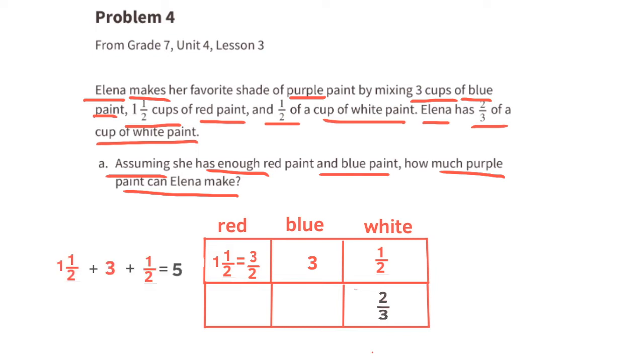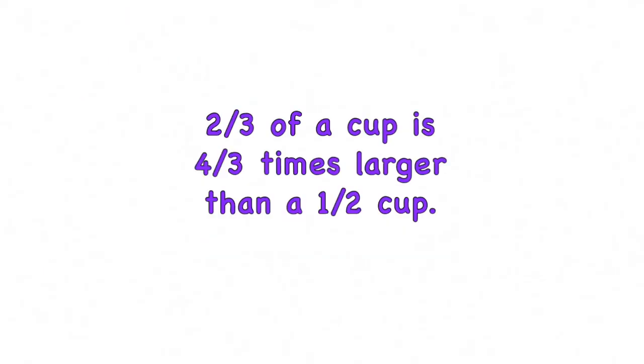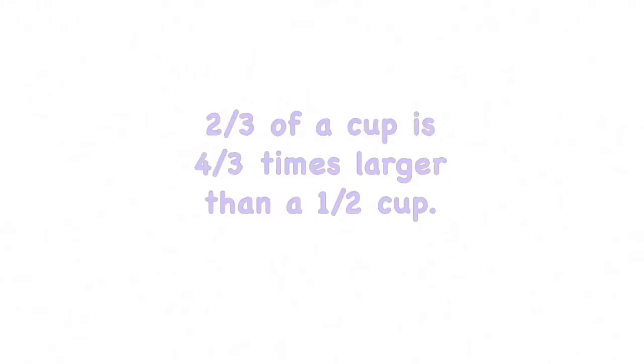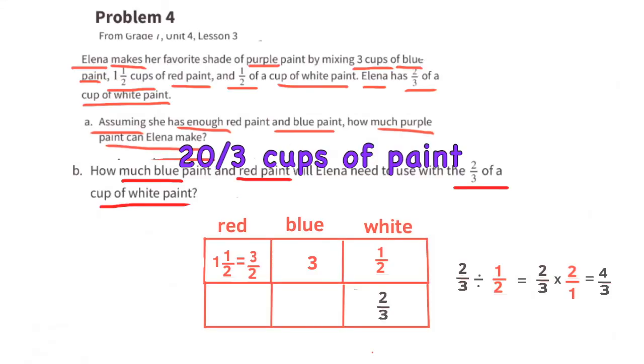If she were to increase the batch to use two-thirds of a cup of white paint, two-thirds of a cup is four-thirds times larger than a half cup, so she'll make four-thirds times the original amount. Four-thirds times five cups equals twenty-thirds cups, so this new batch would make twenty-thirds cups of purple paint.